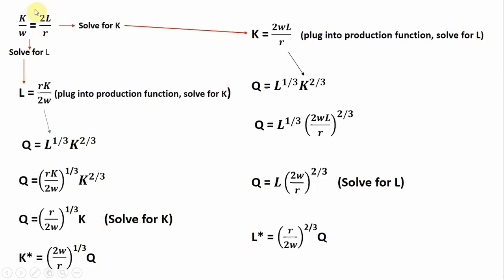We take this condition and solve for L first: dividing through by two and multiplying through by R, you get L equals R times K divided by two times W. Next, we plug this into the production function — wherever we see an L, we substitute in R times K divided by two W, all raised to the one-third. After substitution, K to the one-third multiplied by K to the two-thirds is just K. Solving for K gives us the long-run conditional input demand for capital, which is contingent on the quantity of output Q appearing on the right-hand side.